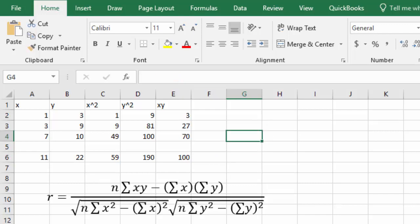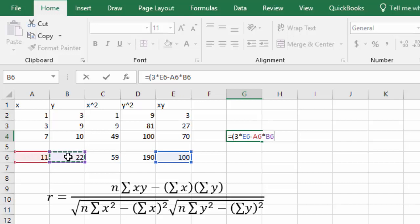Now we just have to type in our formula for r, which is equals, open a parenthesis for the numerator, the sample size was 3, times the sum of the x, y's, and I'm just going to click the cell, minus the sum of the x's, I'll click that cell, times the sum of the y's, click that cell, and close the parenthesis.